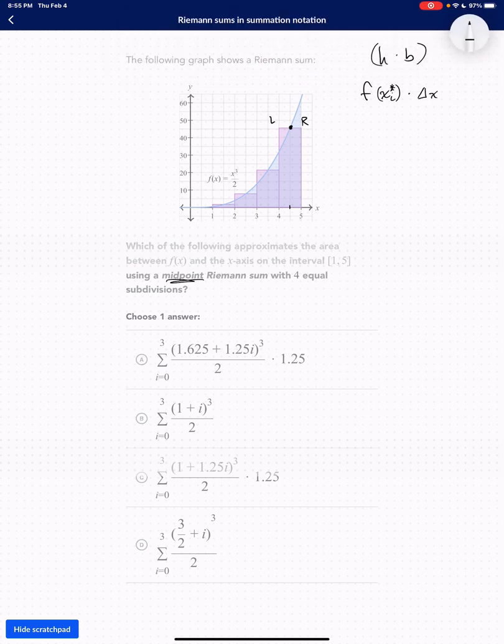Okay, so delta x is the easy one. We want to find that first. That's going to be the change in x. It's very clear that the change in x, delta x, is 1 in this scenario.